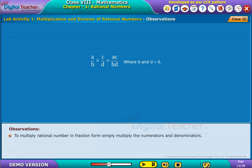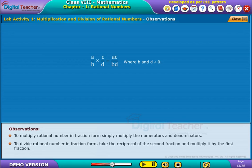where B and D are not equal to 0. To divide rational number in fraction form, where B, C and D are not equal to 0.